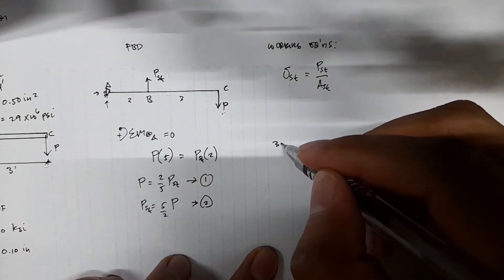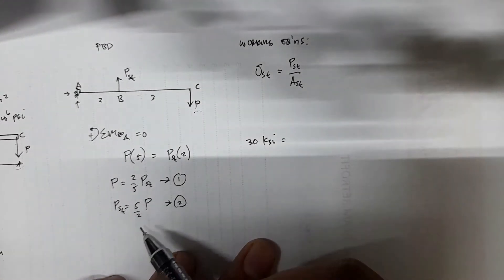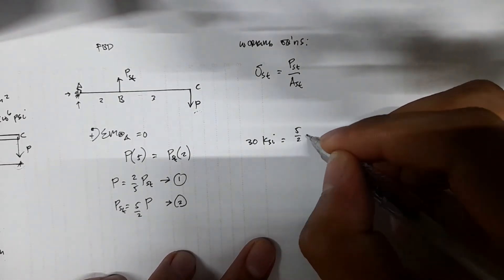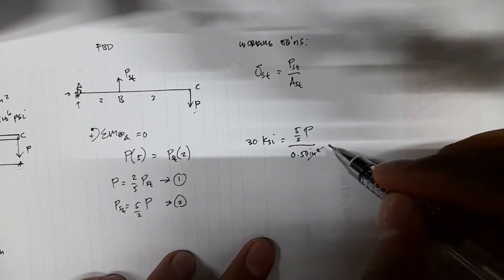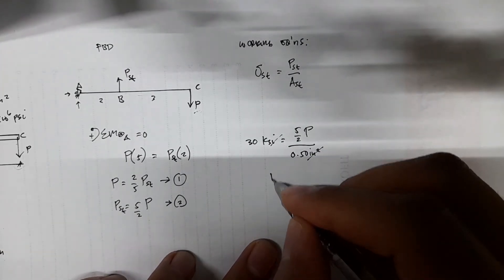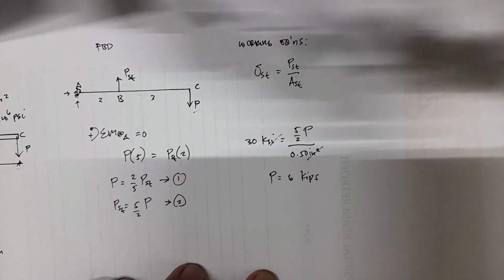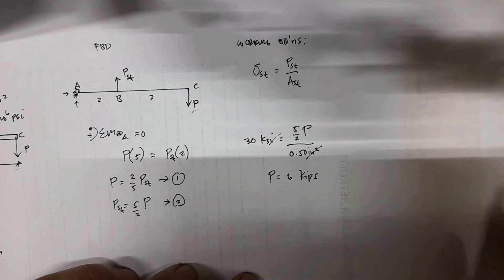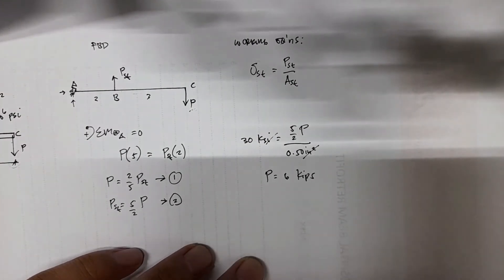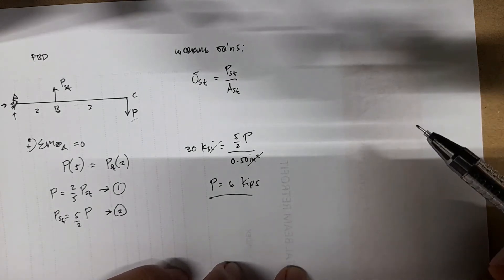We have 30 ksi, which is kips per square inch. PST is 5 halves of P over 0.50 inches squared. The inches squared cancel. We have P equals 6 kips. That's 0.5 times 30 divided by 2.5. So we have the first value of P, considering the 30 ksi limiting stress of steel.